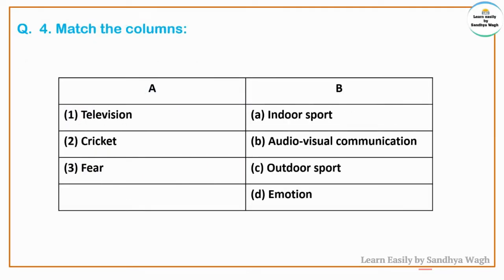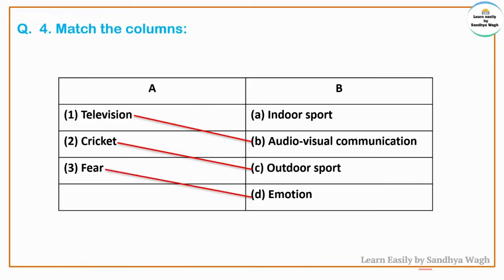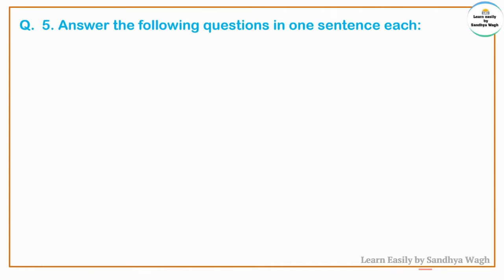Question 4: Match the columns. Column A and Column B — television, cricket, fear. Indoor sport, audio-visual communication, outdoor sports, emotion. Television is audio-visual communication. Cricket is an outdoor sport. Fear is an emotion.